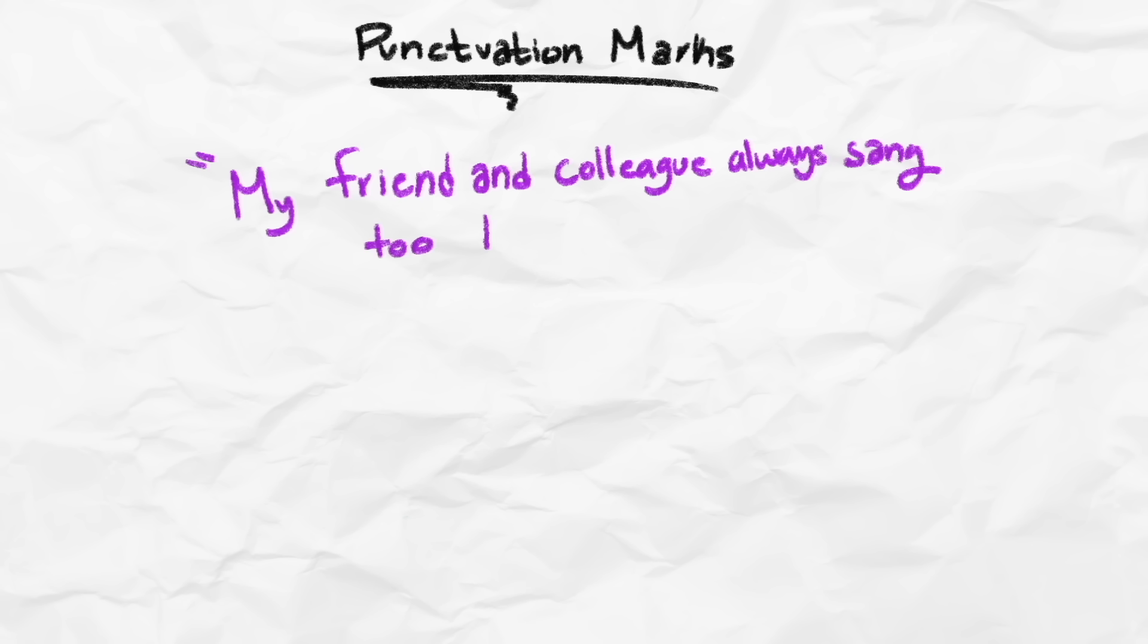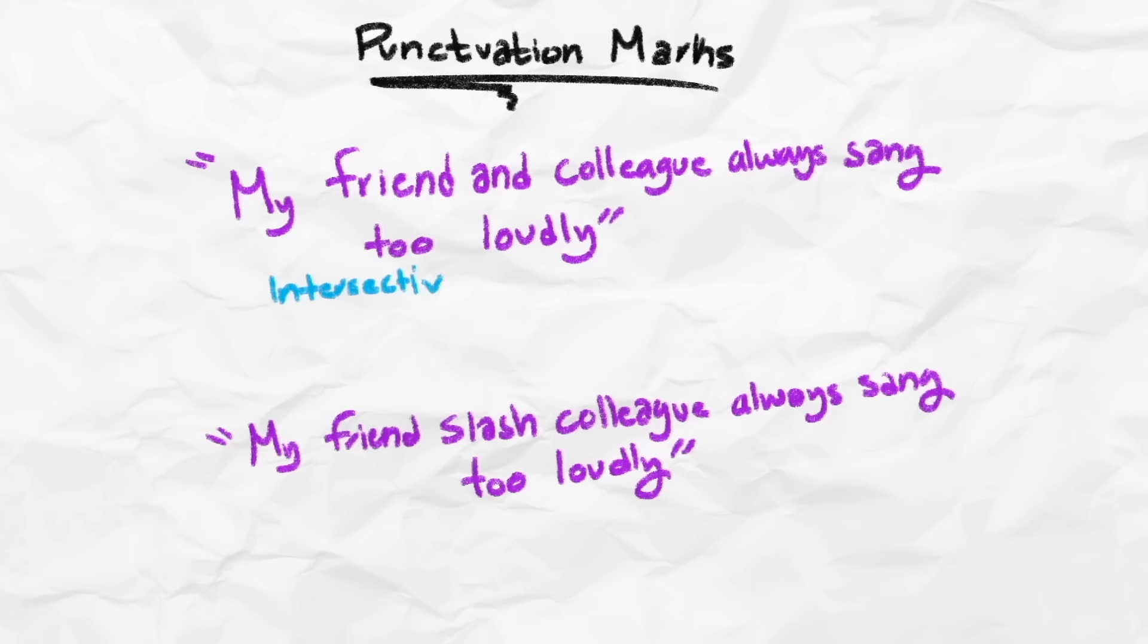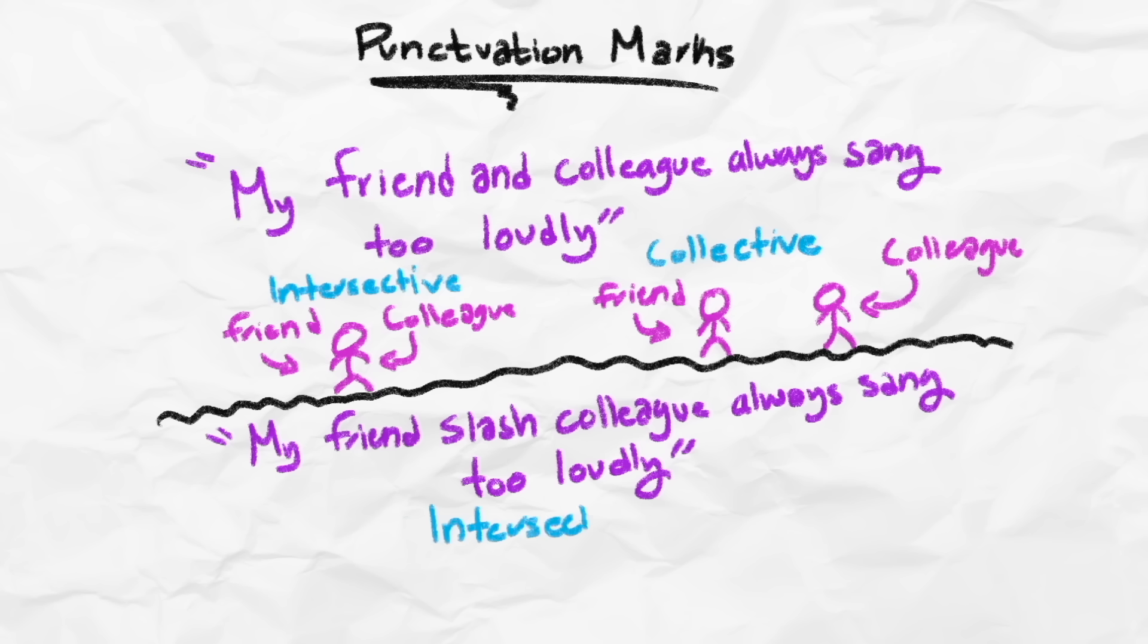My friend and colleague always sang too loudly versus my friend slash colleague always sang too loudly. In the first sentence, and can either be intersective or collective. Intersective means that the two nouns are speaking of the same person. In other words, I'm only talking about one person. They are both my colleague and a friend. However, this sentence is ambiguous because the word and can also be a collective conjunction, meaning that these two nouns are describing two separate people. In other words, I'm talking about a friend and a colleague.